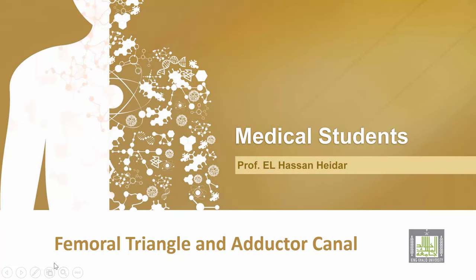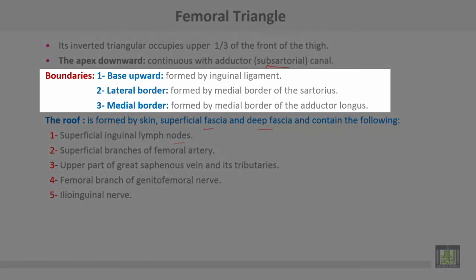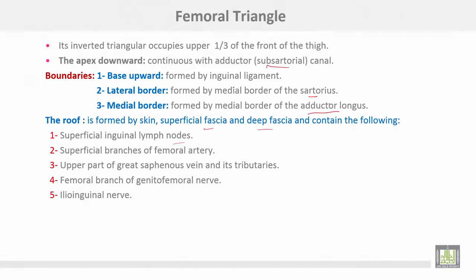The femoral triangle is an inverted triangle occupying the upper third of the front of the thigh. The apex downwards continues with the adductor or subsartorial canal. Boundaries: the base upwards is formed by the inguinal ligament, the lateral border by the medial border of sartorius, and the medial border by the medial border of adductor longus muscle. The roof is formed by skin, superficial fascia, and the deep fascia.